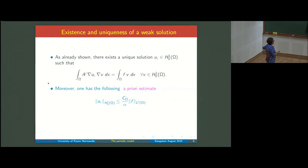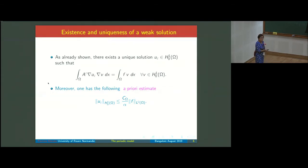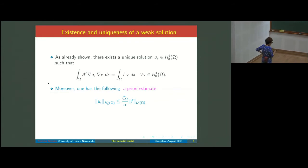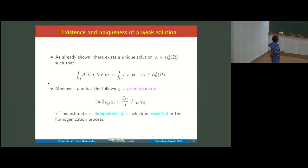Since in the theorem the constant C(Ω)/α is the same for every ε, we have an a priori estimate which is uniform with respect to ε. This uniformity is essential in the homogenization process.